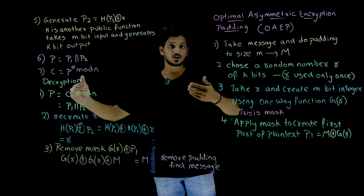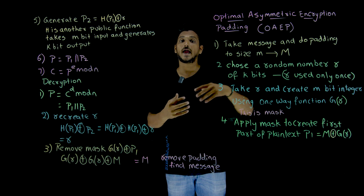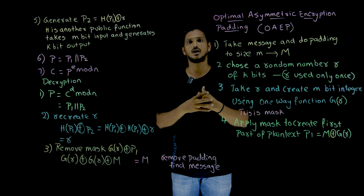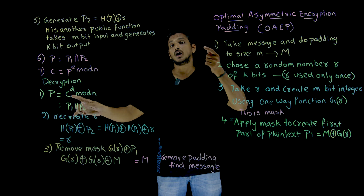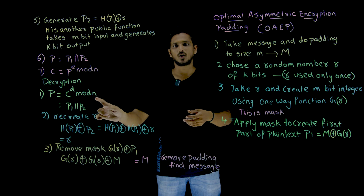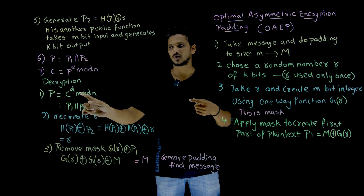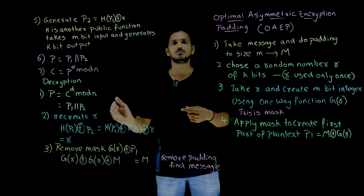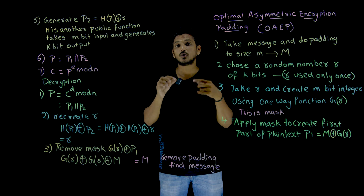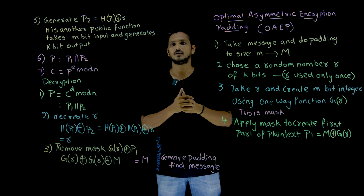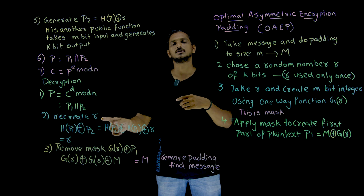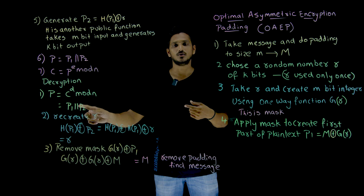During decryption, once the ciphertext reaches the destination, how is the receiver going to get the actual message? Because we have done a lot of things here. During decryption, P = C^d mod n - this is what we do in RSA. When you compute C^d mod n, what you get is P1 concatenated with P2, which is our plain text. From P1 and P2, you have to generate the actual data. So first, recreate R - once you recreate R, you can easily get the actual message. How do you generate R using P1 and P2?